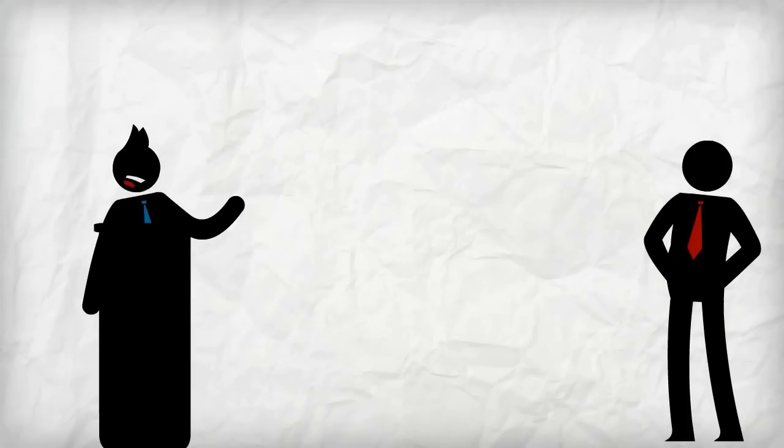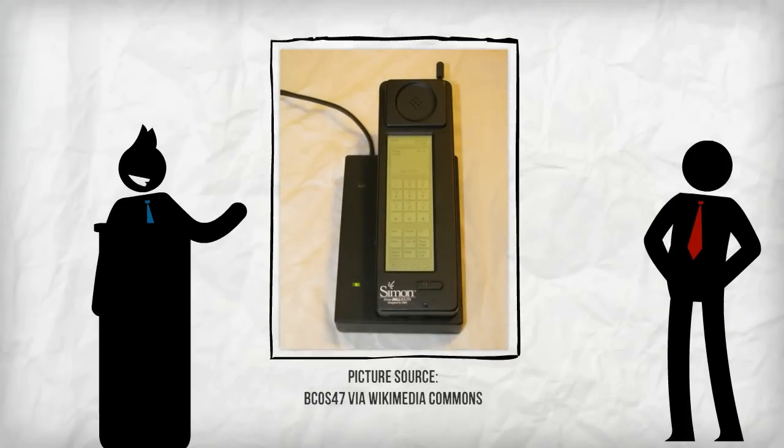OK, now let me show you a picture. This is the first smartphone. It was invented in 1992 by IBM. Now the question is, are they safe to use?